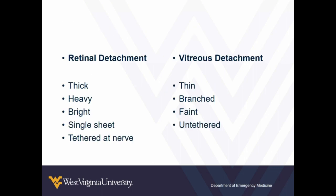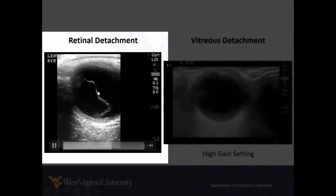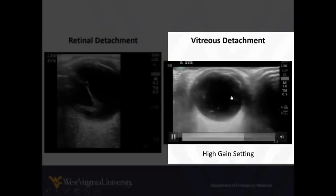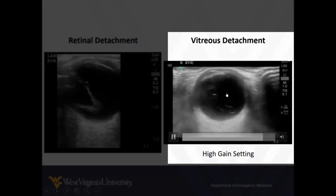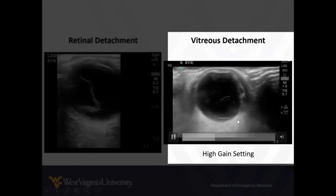Let me break these down because they can look very similar. Retina versus vitreous: the retina is thick, heavy, bright, a single sheet, tethered at the nerve. Vitreous detachment is thin, has branches, not as well defined, and it's not really tethered anywhere — you usually have to turn the gain up a little higher to see it well. As visual examples: big, thick retina versus less distinct branching vitreous detachment. You see how bright everything is around it, because we've turned up the gain a lot to see it well.